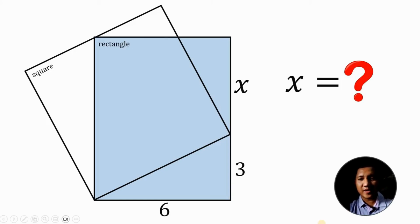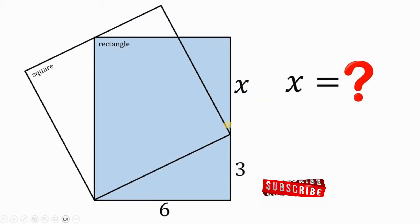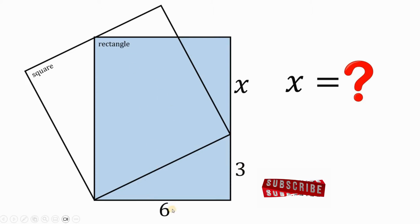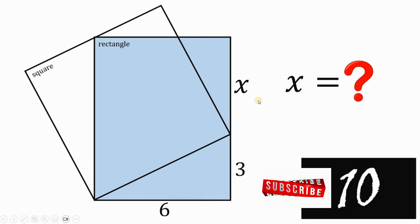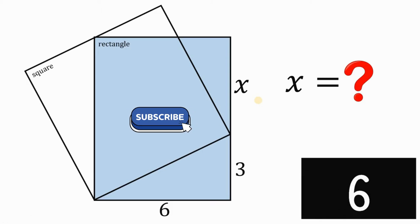Can you solve this geometry challenge? Here's the question. Given this rectangle and a square is tilted such that the length of this rectangle cuts into x and 3, and the width of this rectangle is x, our goal is to solve for the value of x. You can pause this video if you want to give this problem a try.